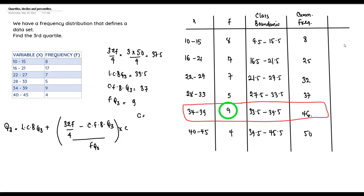The class interval is the width of each class. For 10–15: 15 − 10 = 5; for 16–21: 21 − 16 = 5; for 22–27: 27 − 22 = 5. We have a constant class interval of c = 5.